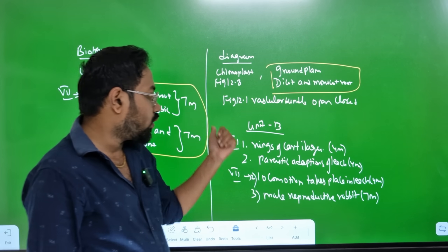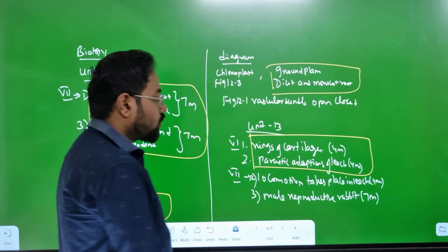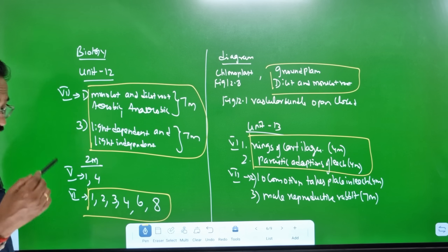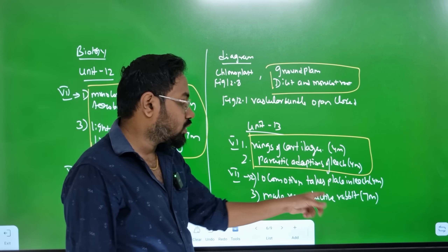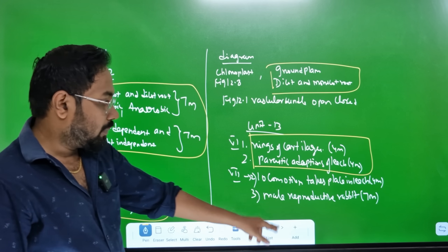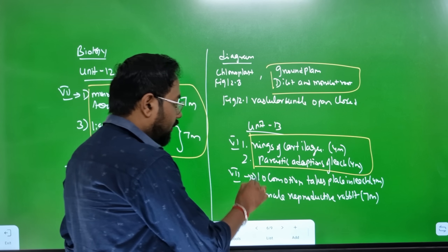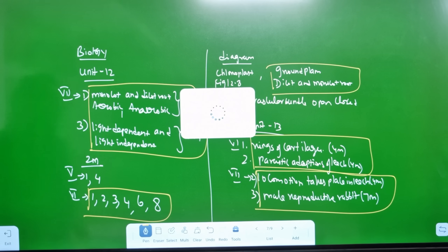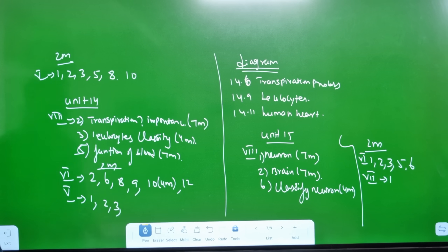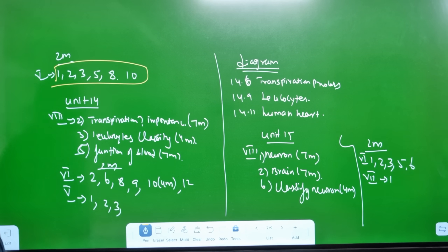Parasitic addition - there is a Roman number. If you look at the Roman number, you can see it. The second one is 4 marks. Male reproductive system of rabbit is 7 marks. So in this lesson, you can see the 4 marks and the 2 marks - 1, 2, 3, 5, 8, 10. That is the dental formula - that is easy.